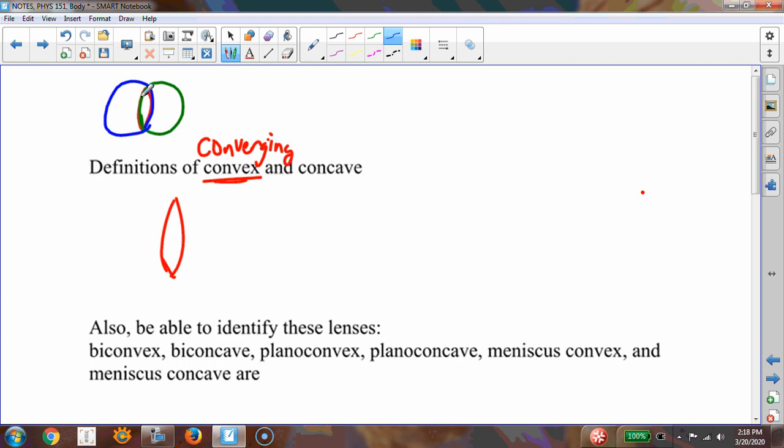So, this is a convex lens. It's called converging because of what it does to the light. If I have light rays that come in, and they go through the lens, they will converge at a particular point. That's why it's called a converging lens.